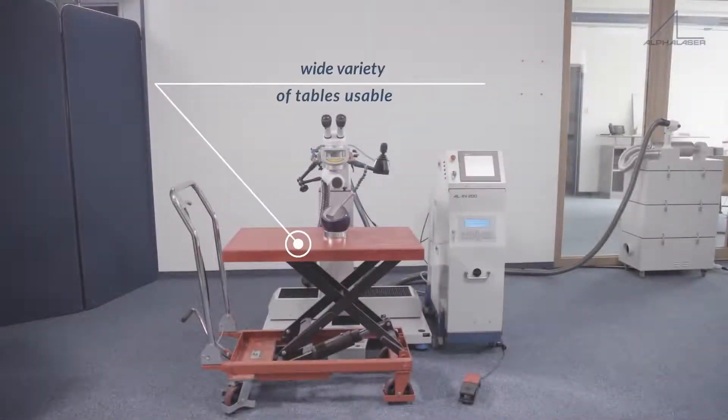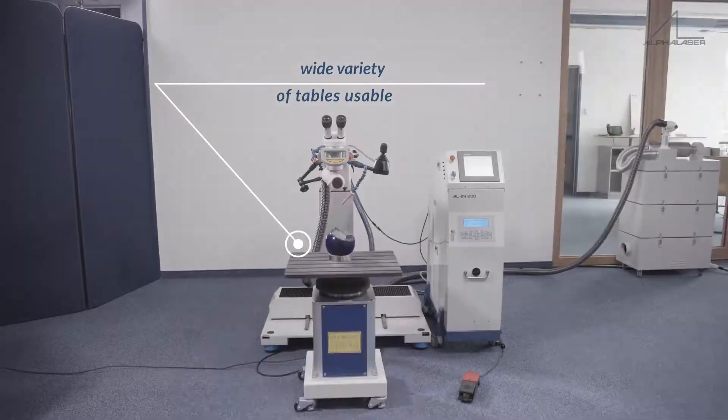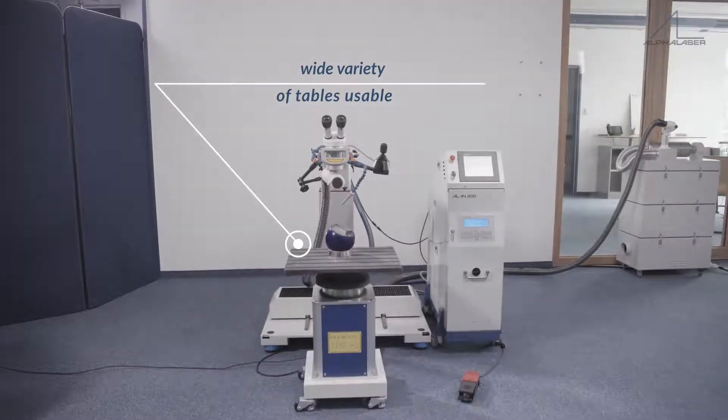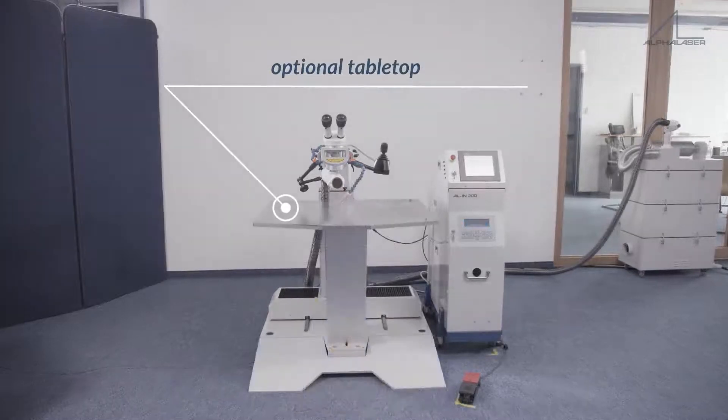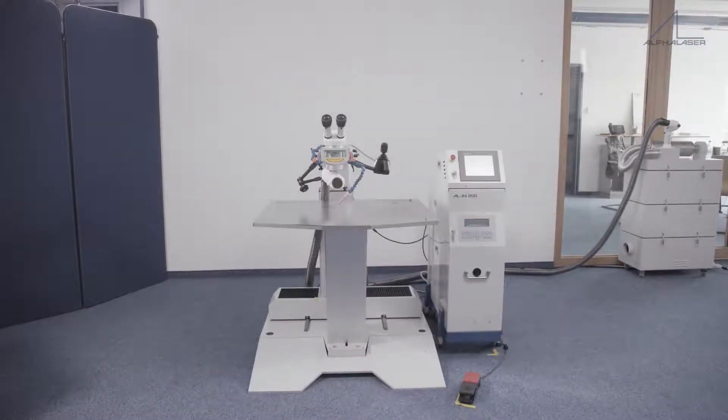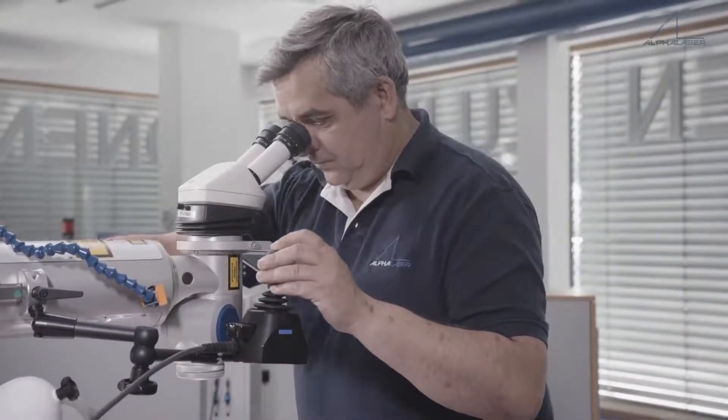In front of the laser Z axis is enough space for a wide variety of tables or for large pieces on a pallet. You may place a scissor lift table, a table with Z adjustment, or you can work on the Alpha Laser tabletop which is also available.